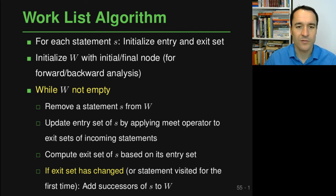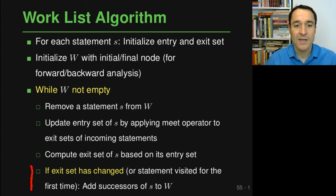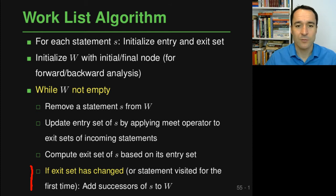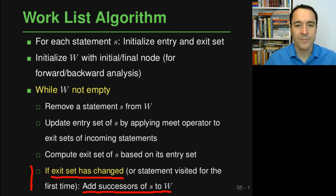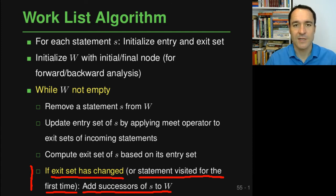The important part of the worklist algorithm is that we only put statements back into the worklist if the exit set has changed. If nothing changes, we do not have to revisit that statement or the statements that depend on it. The algorithm checks if the exit set of s has changed, and only then adds the successors of statement s to the worklist. Additionally, when a statement is visited for the first time, its successors are also added to ensure every statement is visited at least once.